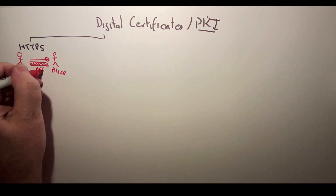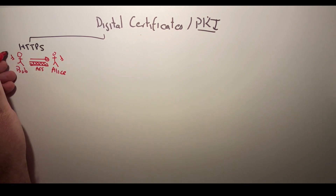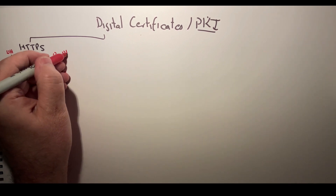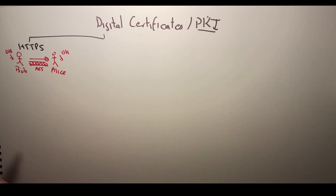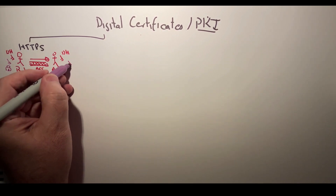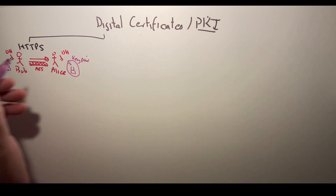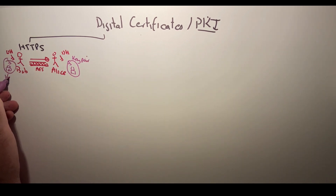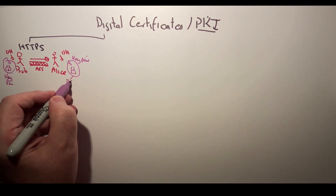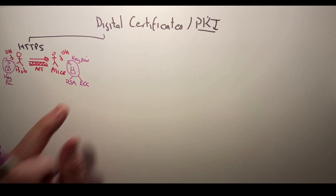There are three main things going on: we use symmetric key, typically AES, to create the tunnel; we use key exchange such as the Diffie-Hellman method to negotiate a key between Bob and Alice for the tunnel; and we use public key encryption with a private key and a public key to prove Bob and Alice's identities. On the internet this is typically RSA or ECC — elliptic curve cryptography.